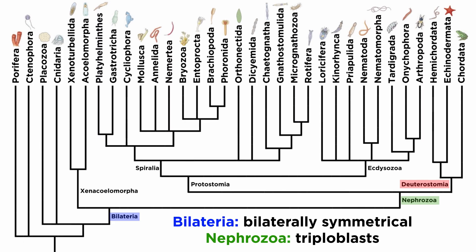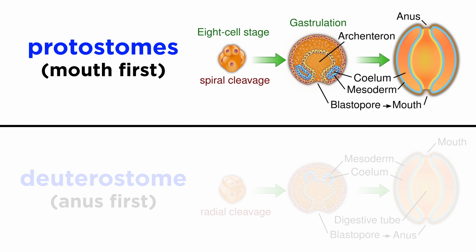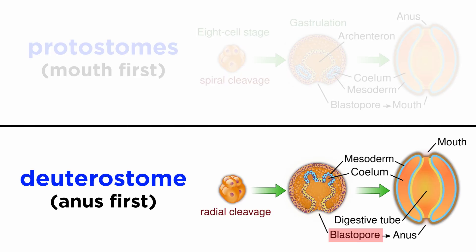But as we know, the characteristics of triploblasty and bilateral symmetry apply to all members of Nephrozoa. What sets deuterostomes apart from protostomes are further differences in their embryonic development. While both clades share a common ancestor, their embryonic development diverges early on, leading to distinct characteristics in adult animals. In the protostomes, during the process of gastrulation, the blastopore — which is an inward folding of cells — will, after development, become the mouth. Meanwhile in the deuterostomes, this inward folding will become the anus.